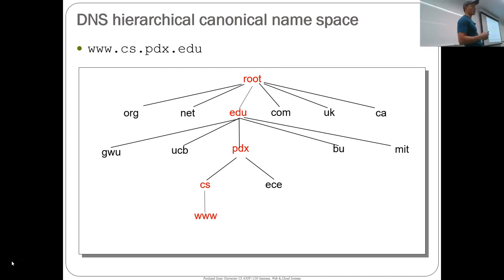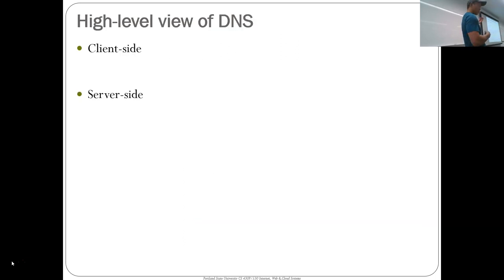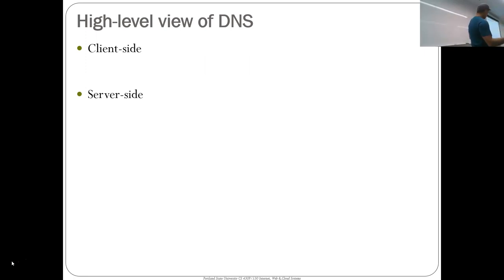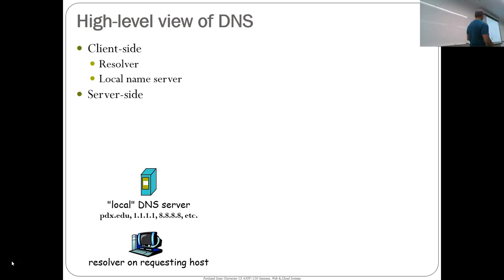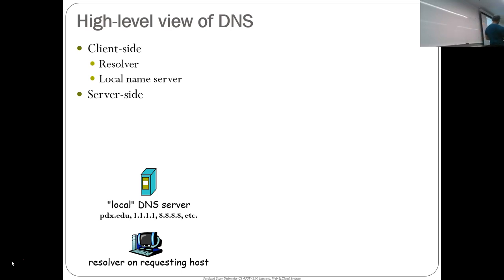They wanted to be able to have anybody within a domain create a name and have the hierarchy look it up. The high-level view of DNS has two parts: the client side and the server side. The client side has a resolver — typically on your end host, either your operating system or the application itself implementing some resolving code. It's the thing that gets a name and says, I have to figure out what to do with it. It might not know the mapping, but it knows who to ask.